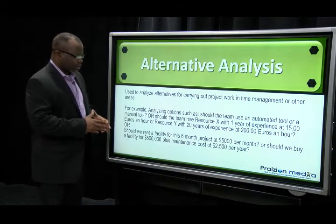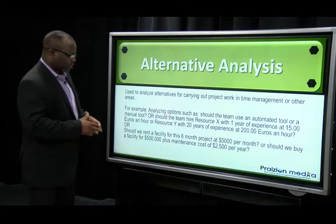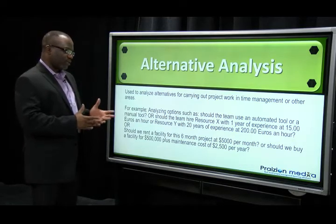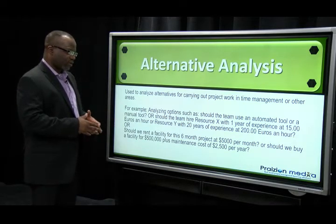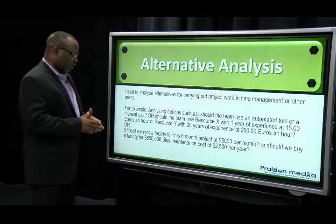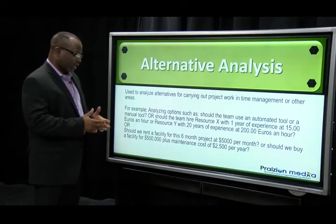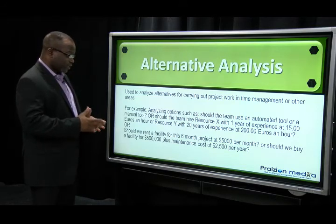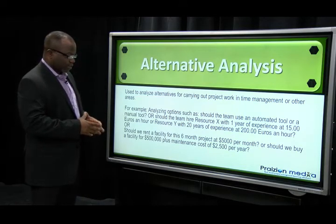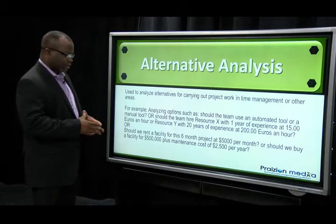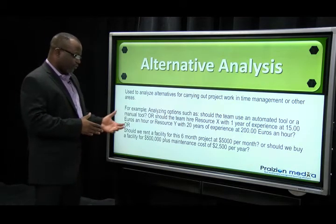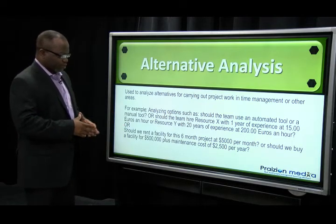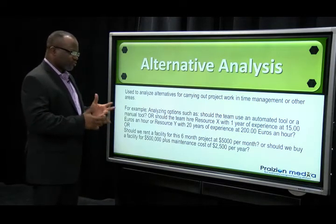For example, analyzing options such as: should the team use an automated tool or a manual tool? Should the team hire resource X with one year of experience at 15 euros an hour, or resource Y with 20 years of experience at 200 euros an hour? Or should we rent a facility for a six-month project at $5,000 per month, or buy a facility for $500,000 plus maintenance cost of $2,500 per year?